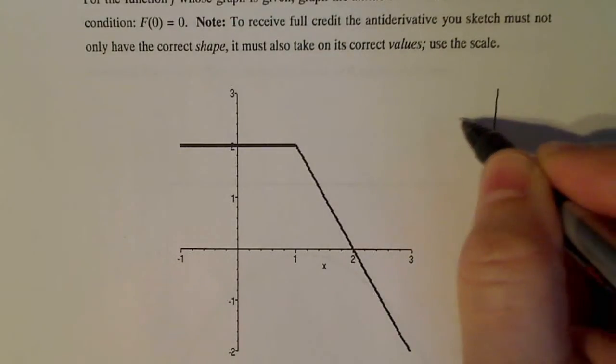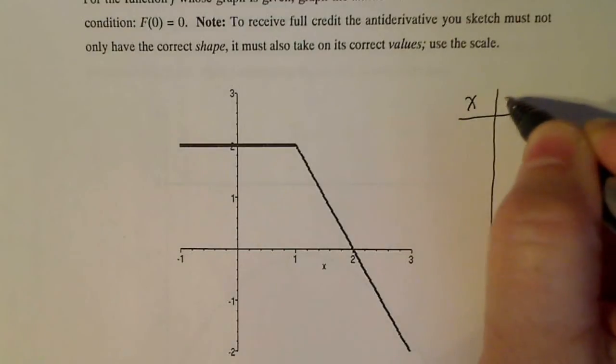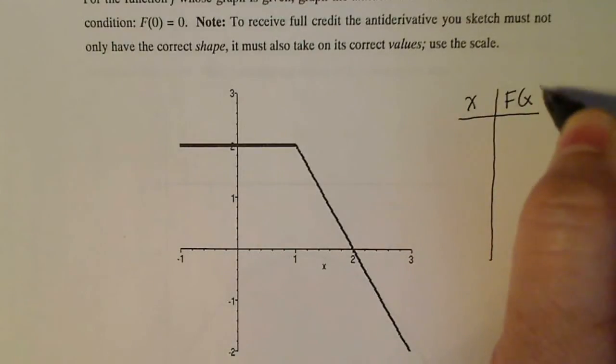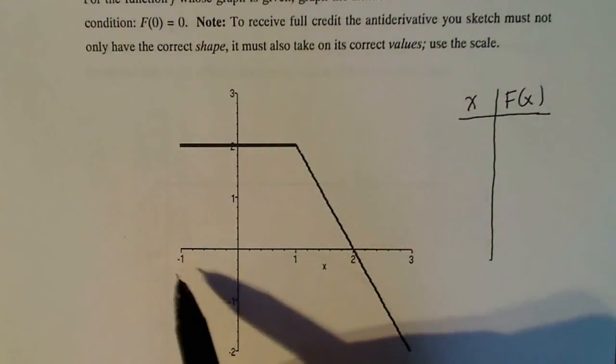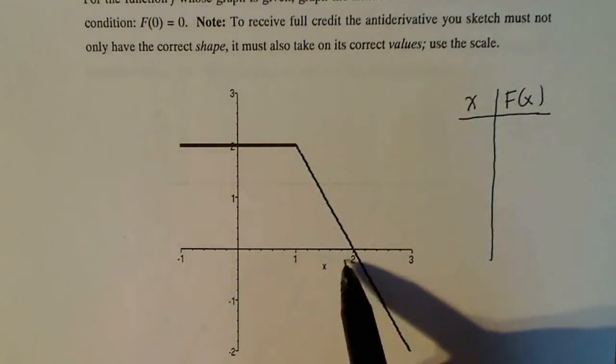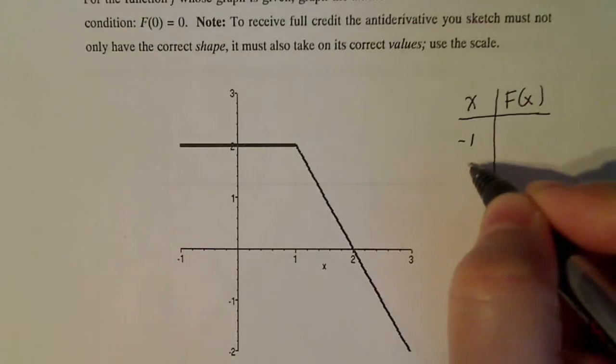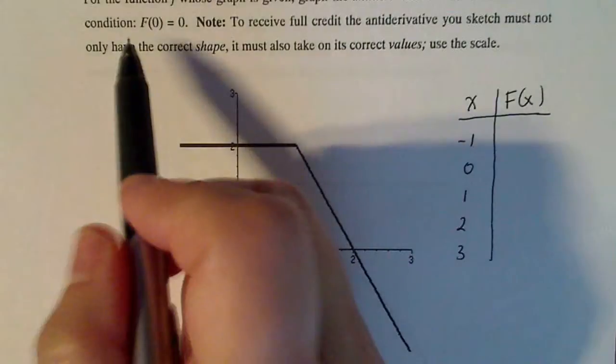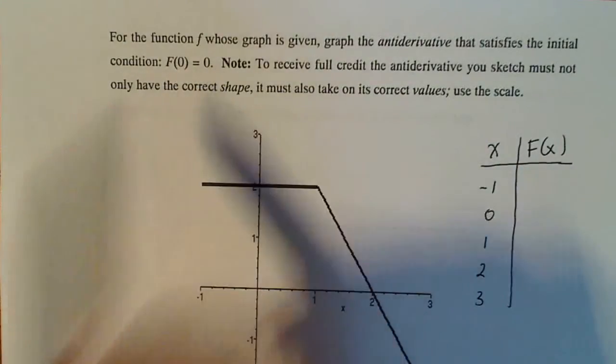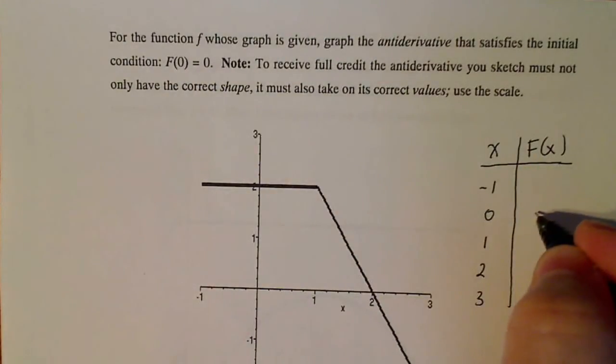So I make my chart over here, x and my antiderivative values. And if I look at this, I know I want to try negative one, zero, one, two, and three. So negative one, zero, one, two, and three. And the only one I know for sure was given to me: f of zero equals zero. So I'll put that here now.